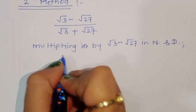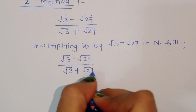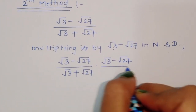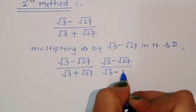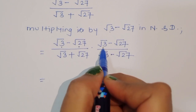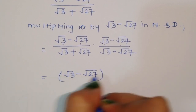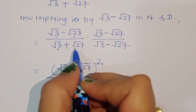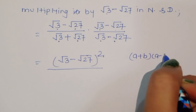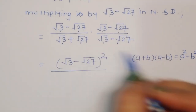So we multiply numerator and denominator by square root of 3 minus square root of 27. The denominator becomes (square root of 3 plus square root of 27) times (square root of 3 minus square root of 27). Using the formula (a plus b)(a minus b) equals a squared minus b squared, with a equal to square root of 3 and b equal to square root of 27, the denominator becomes a squared minus b squared.